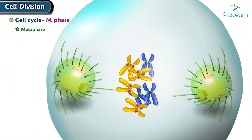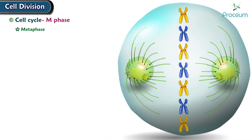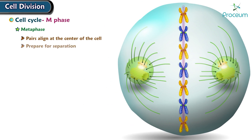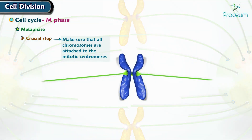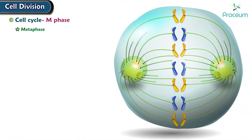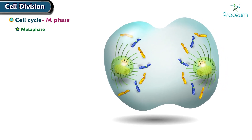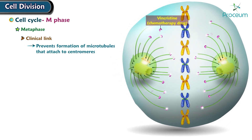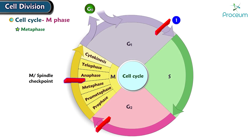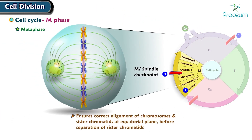Stage 2 — Metaphase: Metaphase is a stage during which all sister chromatid pairs align at the center of the cell and prepare for separation. Checks are made to ensure all chromosomes are attached to the mitotic centromeres such that when pulled apart, the sister chromatids are evenly split between the two new cells. Clinical link: Vincristine, a chemotherapy drug, prevents the formation of microtubules that attach to the centromeres in mitosis. M checkpoint (spindle checkpoint): This is the third checkpoint, between metaphase and anaphase, ensuring correct alignment of chromosomes and sister chromatids at the equatorial plane before separation.